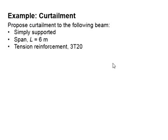Let us try an example for the curtailment. The beam is simply supported. The span is 6m and the tension reinforcement bar is 3T20. You may pause the video for a while to work out the solution.